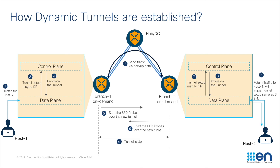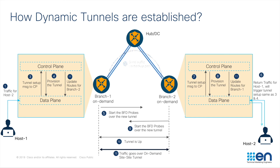This completes the tunnel formation process between the branch 1 and branch 2 edge routers. At this stage, the control plane on each side will now update their routing table so that the next hop now points traffic towards the branch T-locks directly, as compared to the next hop earlier which used to point towards the hub location. Now traffic will directly flow over this new dynamic on-demand site-to-site tunnel.